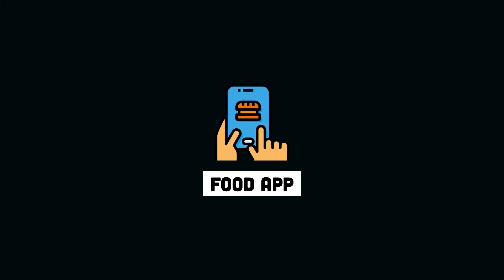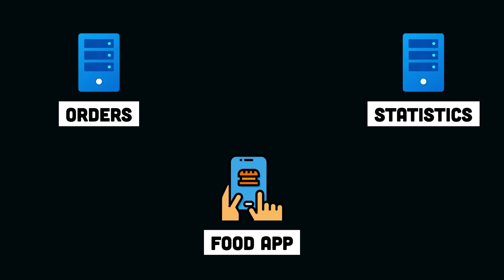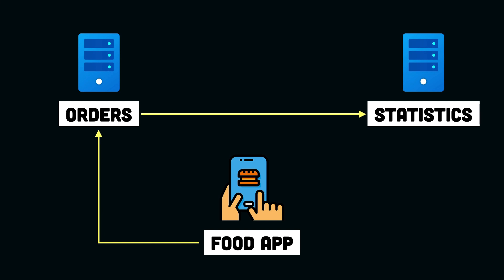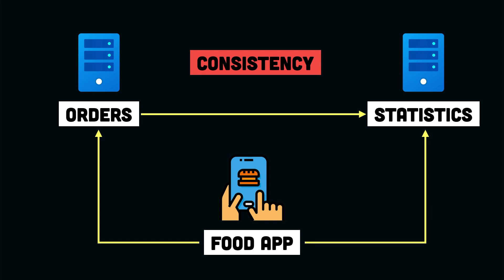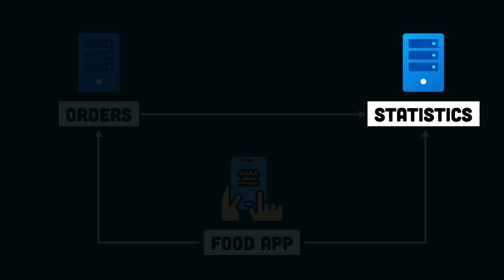Let's focus on the food application. Let's say our food application is split across two services: an order service where orders are placed, and a separate stats service where different kinds of reports are generated — for example, the user can check the number of orders they have placed. Consistency in this system would mean that whenever we place a new order, the stats API should have the valid count for the number of orders the user has placed. For example, if I have placed five orders, the stats API should return and tell me that I have five orders.